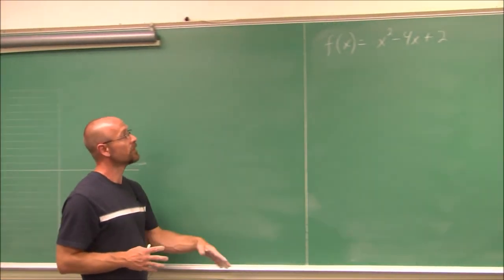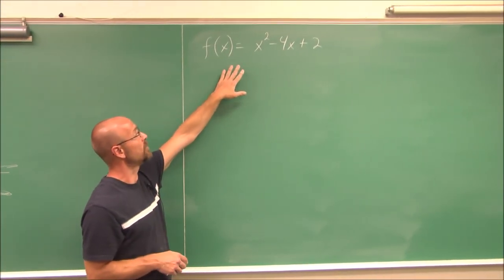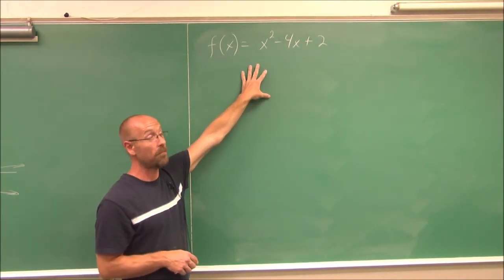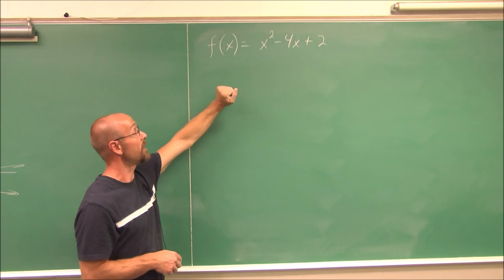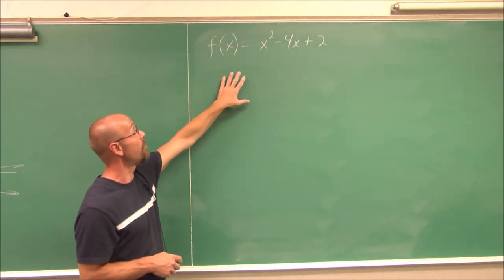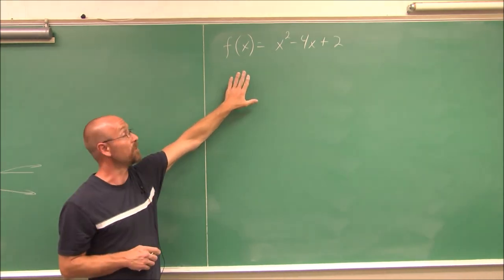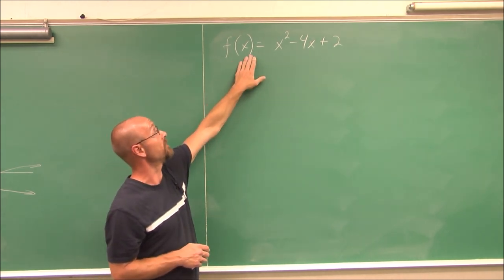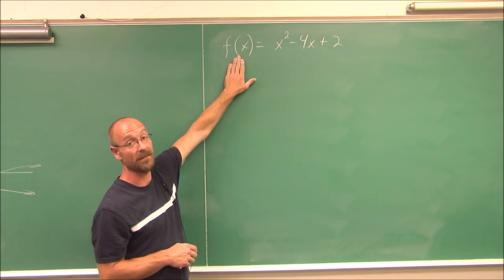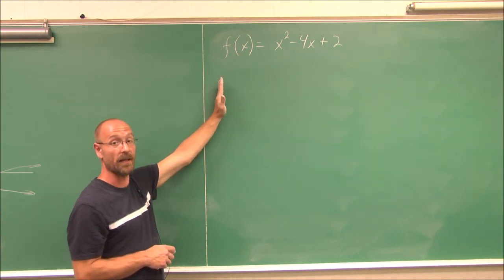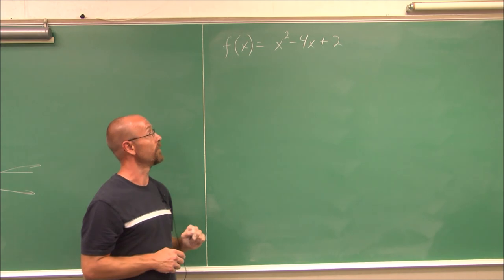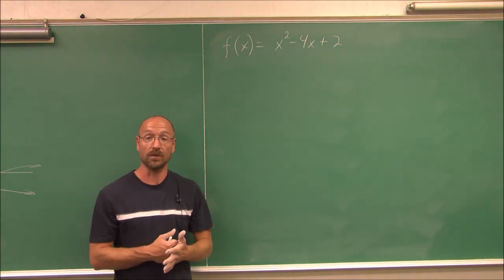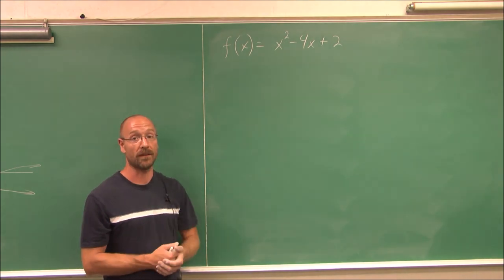Let's look at one more: f(x) equals x squared minus 4x plus 2. This is a parabola and it is a function, so that should tell you what direction it's going to open. I want you to try this one yourself. You can complete the square, or use the vertex formula — the standard vertex formula, since it is a function. Find h equals negative b over 2a, then evaluate the function for that value you find. This has been section 9.2, parabolas. Thank you for watching.